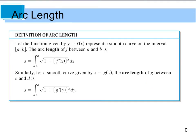The definition of arc length says that the arc length of a function f between two points a and b is given by S — which represents arc length — equal to the integral from a to b of the square root of one plus f prime of x squared. Note that f prime of x squared is really the slope or the derivative of our function. For a smooth curve given by x equals g of y, we take the same approach, but now we integrate from c to d with respect to y, taking the square root of one plus g prime of y squared.